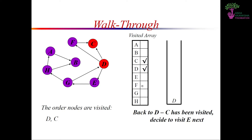First of all, we have a visited array, which is a Boolean array in which we store whether a vertex has been visited or not. We also have a stack on the right. This is the graph we have taken for the example. The task is to conduct a DFS of the graph starting with node D, and we want to traverse through the entire graph.